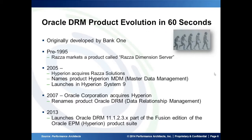Oracle DRM product evolution in 60 seconds. The tool was originally developed by Bank One down in Texas. Pre-1995, Raza marketed a product called the Raza Dimension Server, or Raza DS. In 2005, Hyperion acquired Raza Solutions and renamed the product to Hyperion MDM.